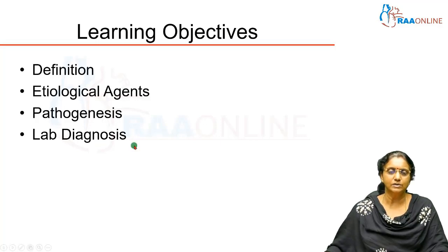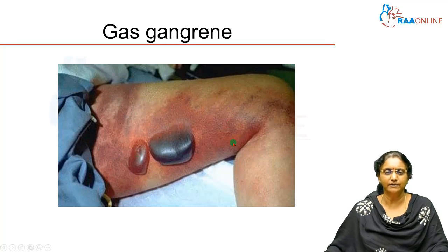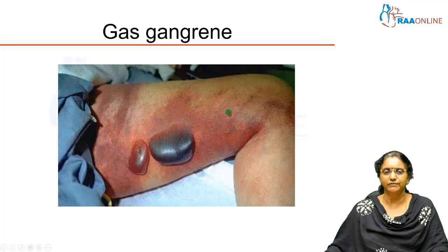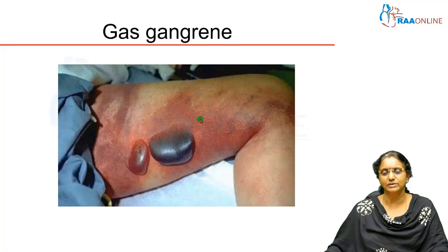We'll also cover how to diagnose the causative agent — the lab diagnosis of this condition. We start with a photograph of gas gangrene. You can see a rapidly spreading edema, a lot of erythema, and big bullae filled with blister fluid. Under the skin you will also see crepitations.